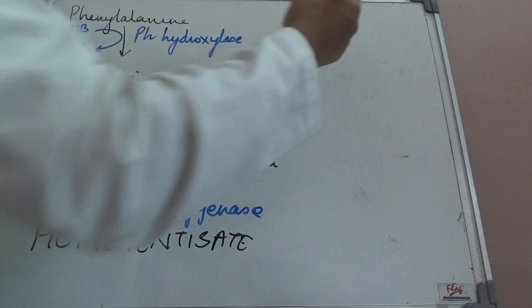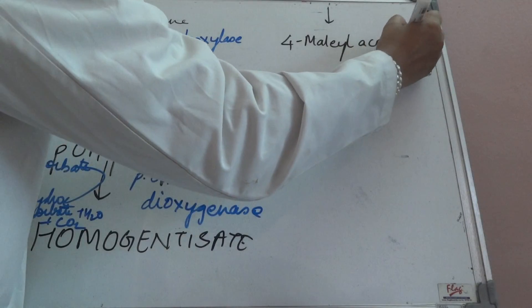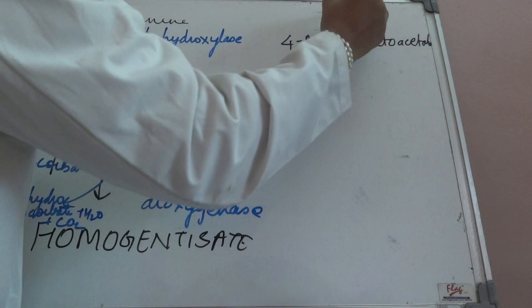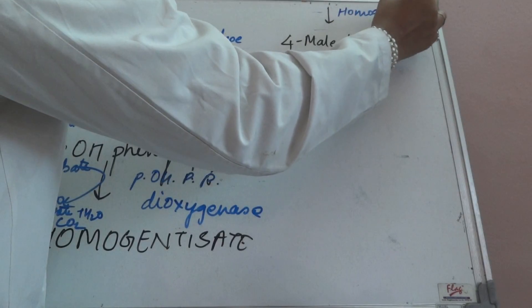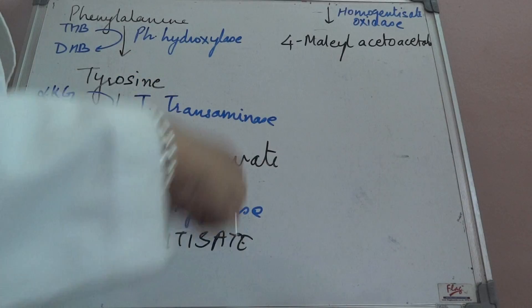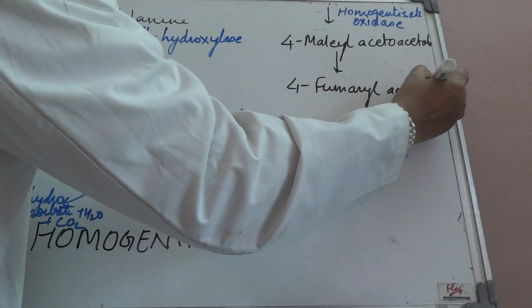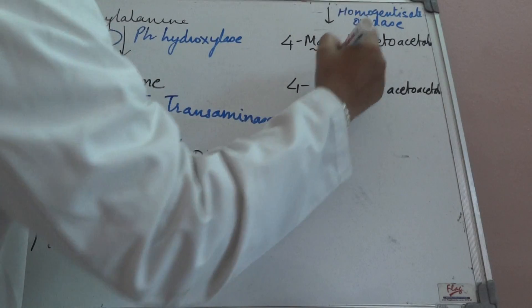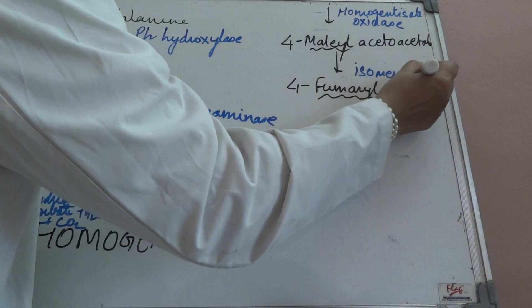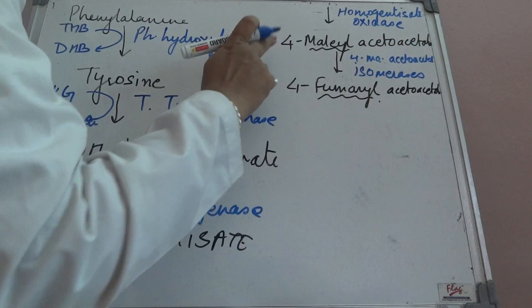Homogentisate further forms 4-maleylacetoacetate in the presence of the enzyme homogentisate oxidase. This 4-maleylacetoacetate then forms 4-fumarylacetoacetate — only the maleyl part is isomerized to the fumaryl part, so it is an isomerization reaction catalyzed by 4-maleylacetoacetate isomerase.